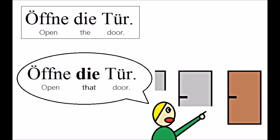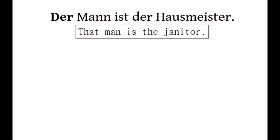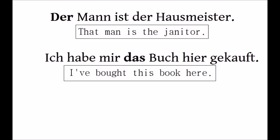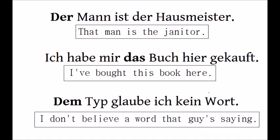Here are some more examples. 'Der Mann ist der Hausmeister' — that man is the janitor. 'Ich habe mir das Buch hier gekauft' — I've bought this book here. 'Dem Typ glaube ich kein Wort' — I don't believe a word that guy is saying.